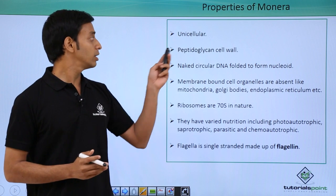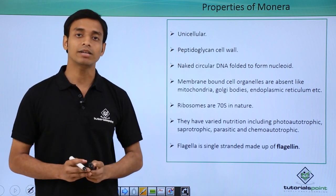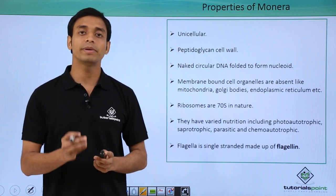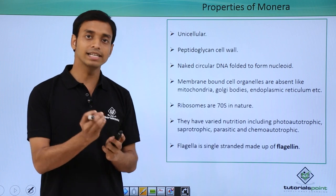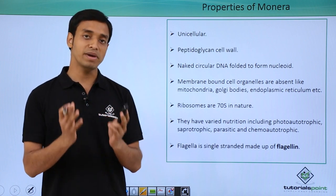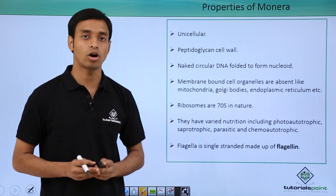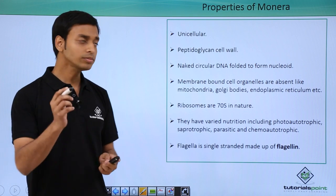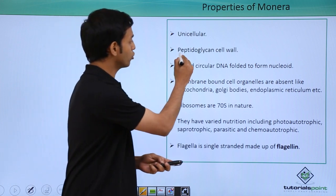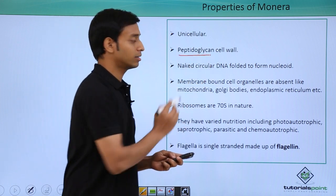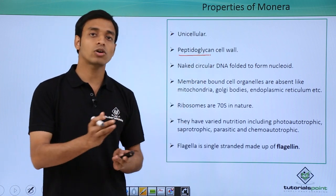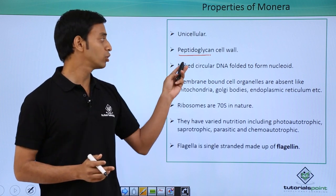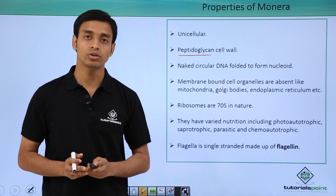First, they are unicellular, which means these organisms are made up of a single cell — a single cell makes the whole organism. They are also composed of peptidoglycan; the cell wall of these organisms is composed of a molecule called peptidoglycan.